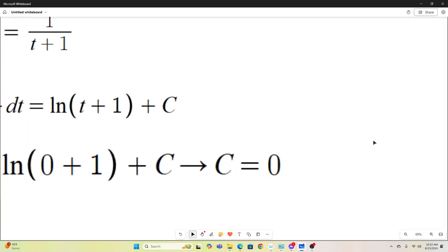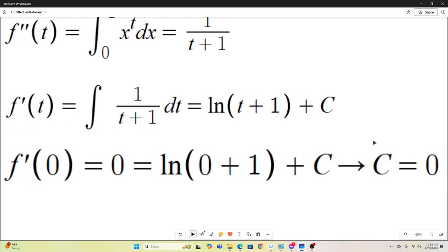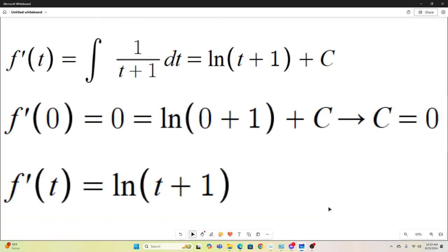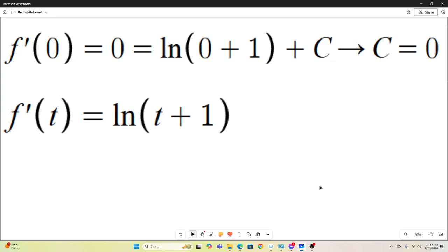Okay. So we know that f prime of 0 is equal to 0. Well, that means it's equal to natural log of 0 plus 1 plus C. Natural log 0 plus 1 is natural log 1, which is 0. That implies 0 is equal to 0 plus C, which means C is equal to 0. So we know that this C is equal to 0. So we have our final expression for f prime of t. Well, we integrate one more time to get back to f of t because that's what we want because then we just plug in 2 and we have our answer.